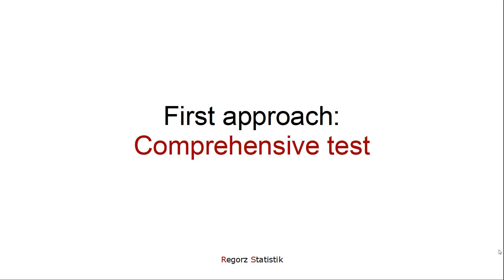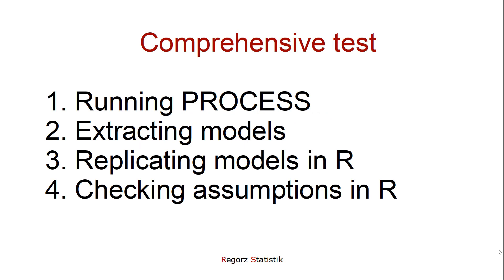The first approach is a comprehensive test. You check which regression models PROCESS has used, rebuild them in R, and check the regression assumptions there. There are four steps. First, you run PROCESS. Second, you extract the models — that is, you look in the output which regression models PROCESS has used. Third, you replicate those models in R. And then, as a fourth step, you check the regression assumptions in R.